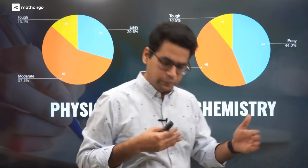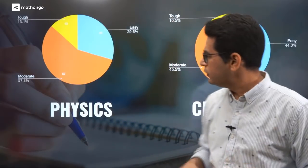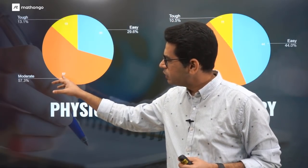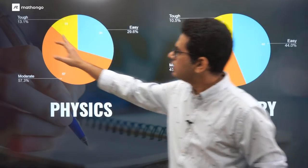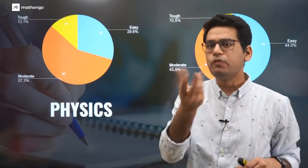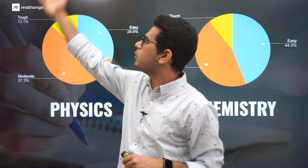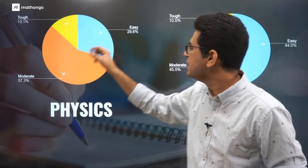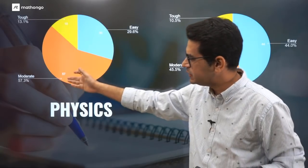If we talk subject-wise, in the combined physics and chemistry paper, physics again if you notice, moderate is 57%, tough 13%. Like last year 2020, physics improved a bit but not too much. 30% is still easy, 57% is moderate.